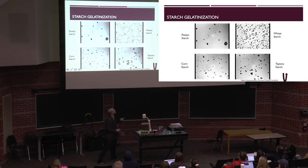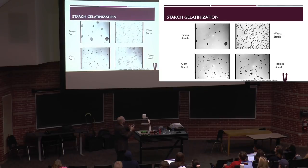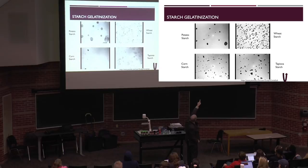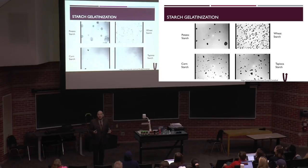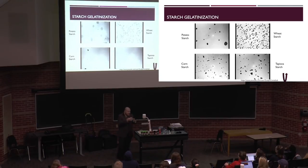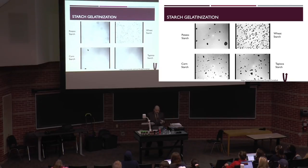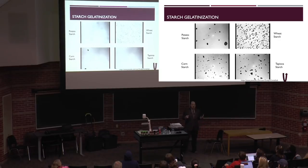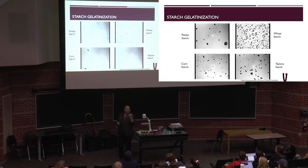Comparing potato starch versus wheat starch: you can see in wheat starch how quickly the granules grow into each other. Once they bump and create a space-filling network, viscosity becomes much higher. In potato starch, the granules never fully reach their size and don't bump into each other. In tapioca starch, you can see the granule structure is lost very quickly, meaning amylose and amylopectin leach out, producing a very pasty starch.